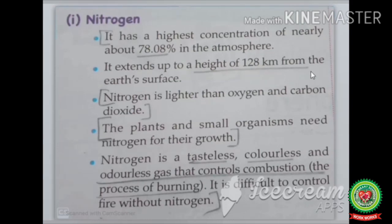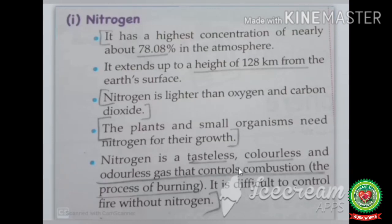Nitrogen is lighter than oxygen and carbon dioxide. Plants and small organisms need nitrogen for their growth but cannot use it directly from the atmosphere. Nitrogen is a tasteless, colorless, and odorless gas that controls combustion — the process of burning. It is difficult to control fire without nitrogen.